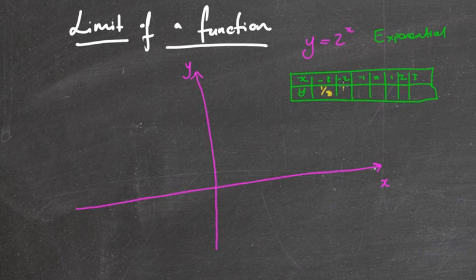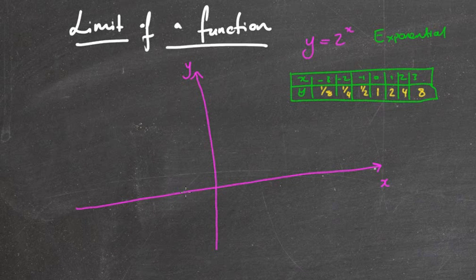Continuing the table: 1 over 4, 1 over 2, then 2 to the power of 0 equals 1, 2 to the power of 1 is 2, 2 to the power of 2 is 4, and 2 to the power of 3 is 8. That gives us some good values. So let's put those in — we've got negative 1, negative 2, negative 3 on the x-axis side.